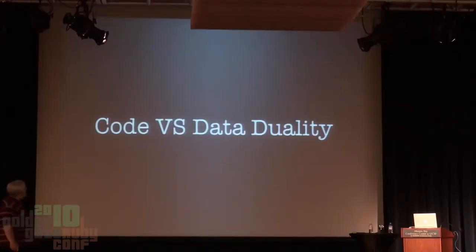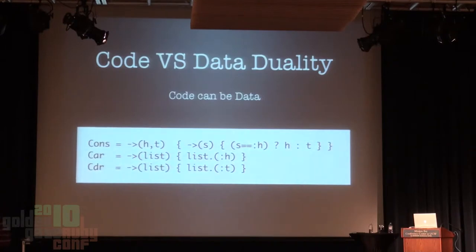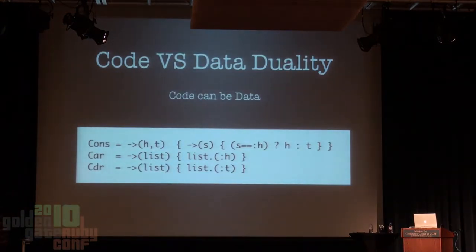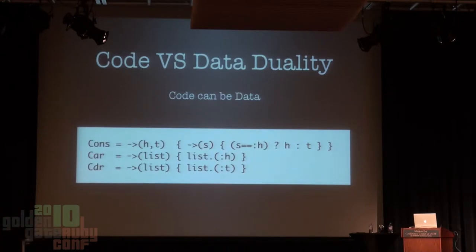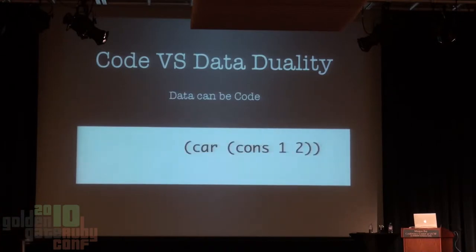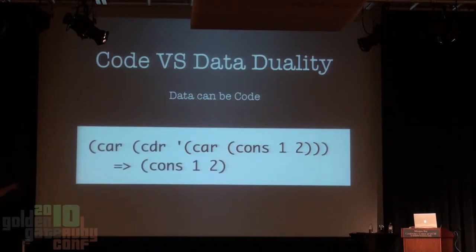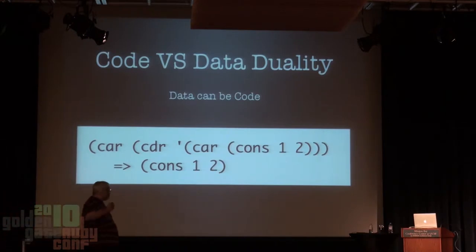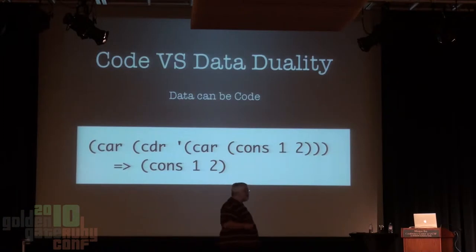We also have this cool code-versus-data duality thing going on. We see that code can be data because we're using code to generate a cons cell. And also data can be code. This is very apparent when programming lists, where this looks like code, but if I operate on the code and return pieces of it—list, code, data, data, code—it's all kind of intermingled together. A duality that we should embrace. We can do a little bit of that in Ruby, but not nearly as clearly as in Lisp.